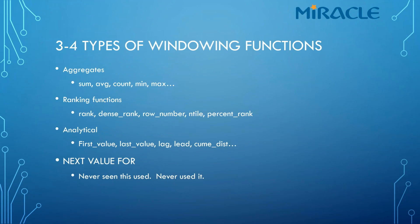There are three to four types of windowing functions. Just for those who aren't SQL Server people — Oracle calls these analytical functions. SQL Server calls some of them windowing functions, and analytical functions are just a subset. I prefer the term windowing functions. The first type is aggregates: sum, average, count, min, max, and so on. There will probably be more of those functions as time passes.